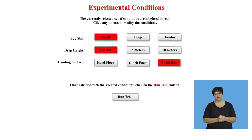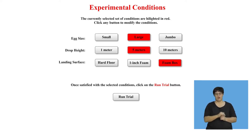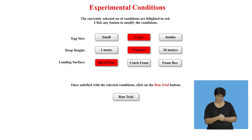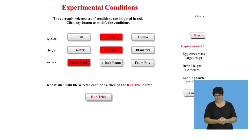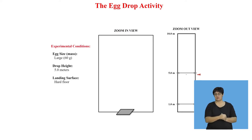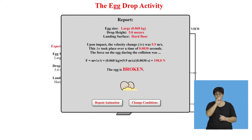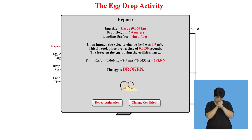Let's use a large egg and drop it from 5 meters onto a hard floor. I think we can all make a prediction as to what's going to happen. We drop the egg — it very much splashed. Egg very broken. The velocity was 9.9 meters per second, it took 0.003 seconds, and experienced a force of 198 Newtons. It's smashed — it's a mess.